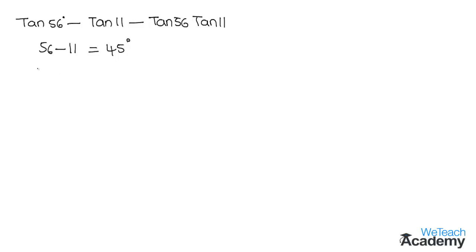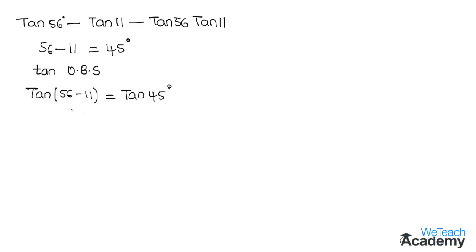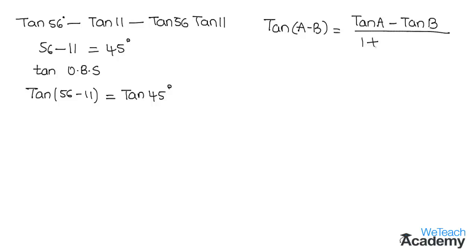Now apply tan on both sides. By applying tan on both sides we get tan(56 degrees minus 11 degrees) equal to tan 45 degrees. Here tan(56 minus 11 degrees) is in the form of tan(A minus B), which equals tan A minus tan B divided by 1 plus tan A tan B.